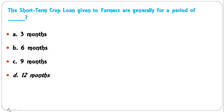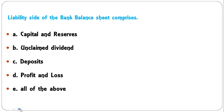The short-term crop loan given to farmers is generally for a period of 3 months, 6 months, 9 months, or 12 months? It is generally for 12 months, so D is the correct answer.